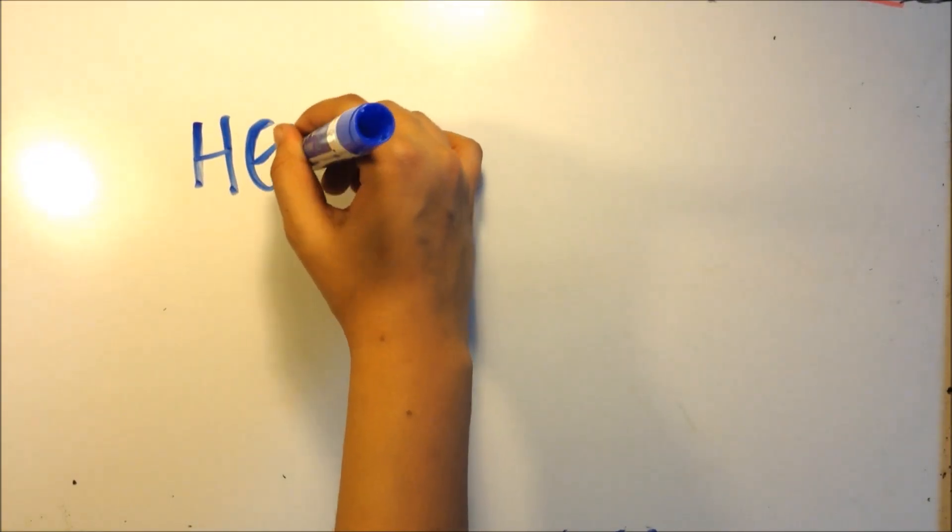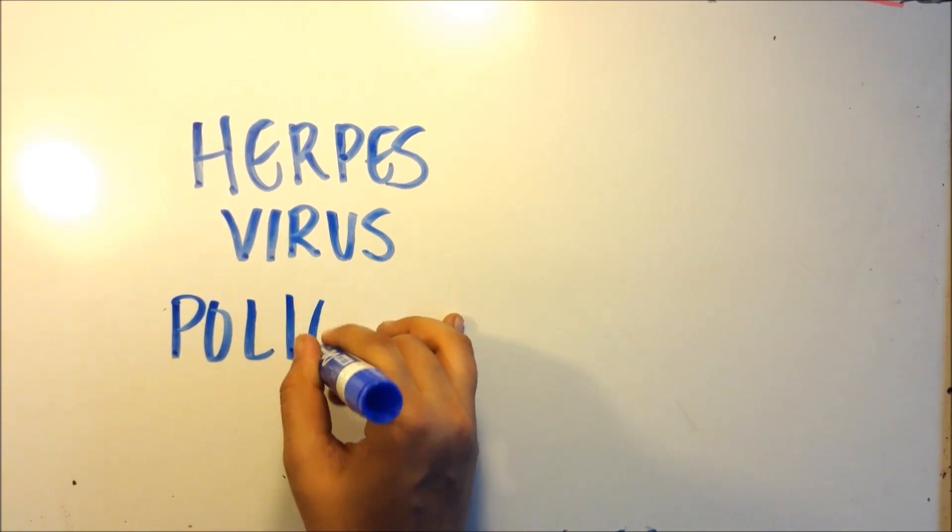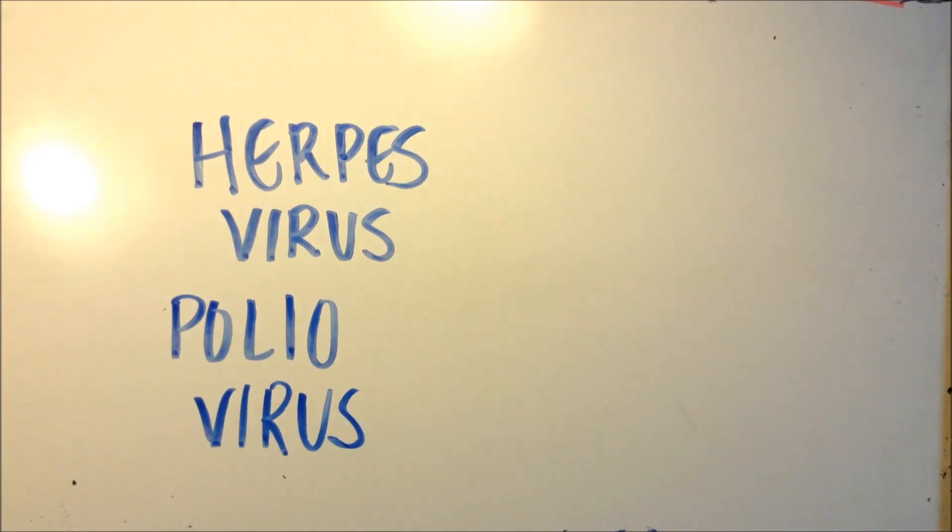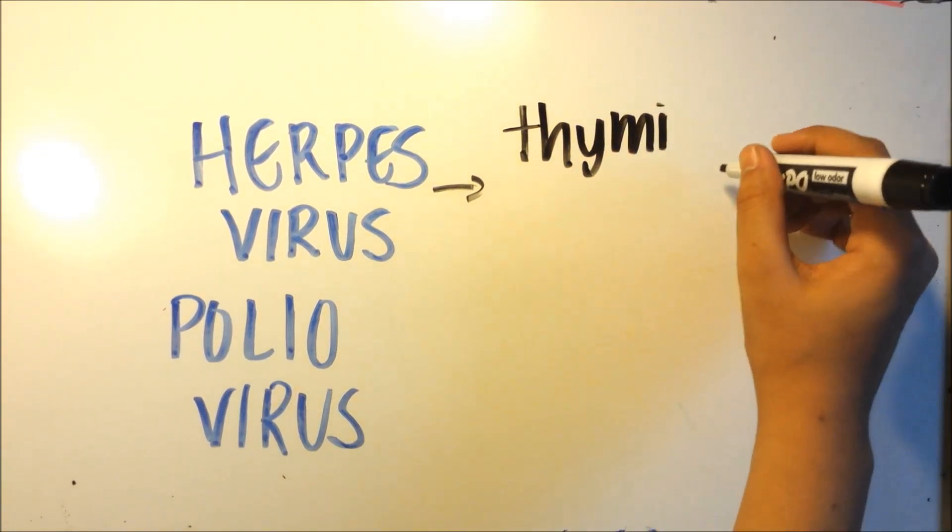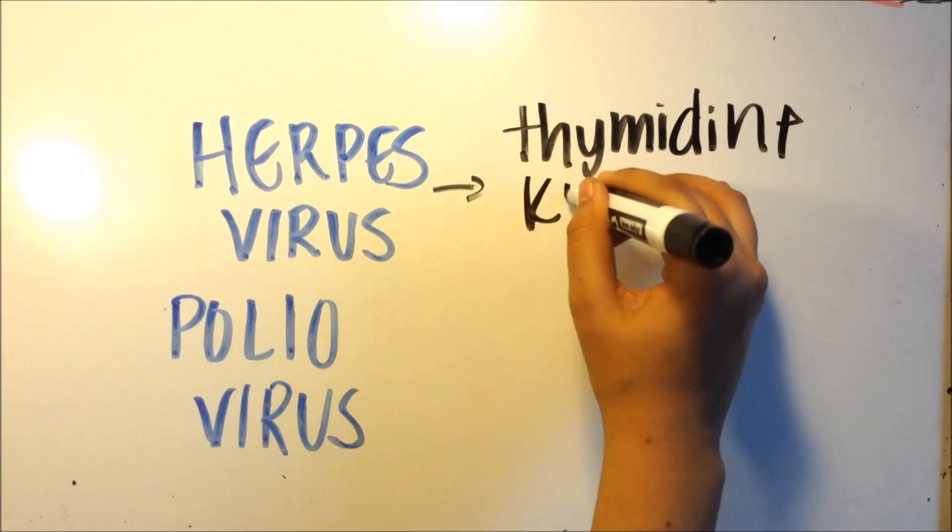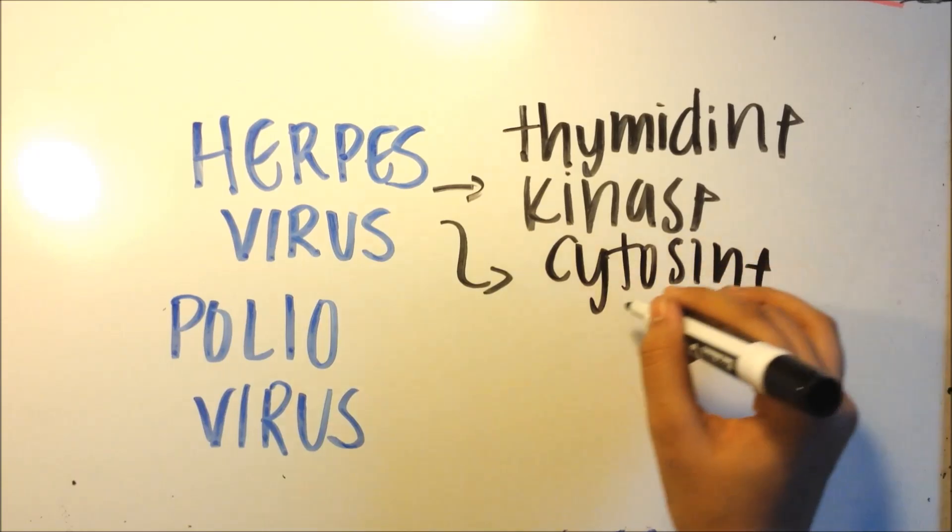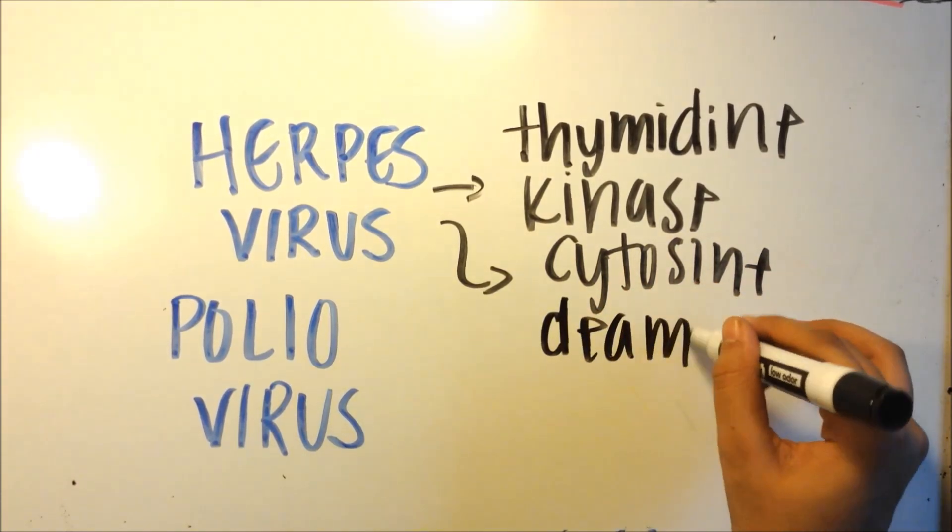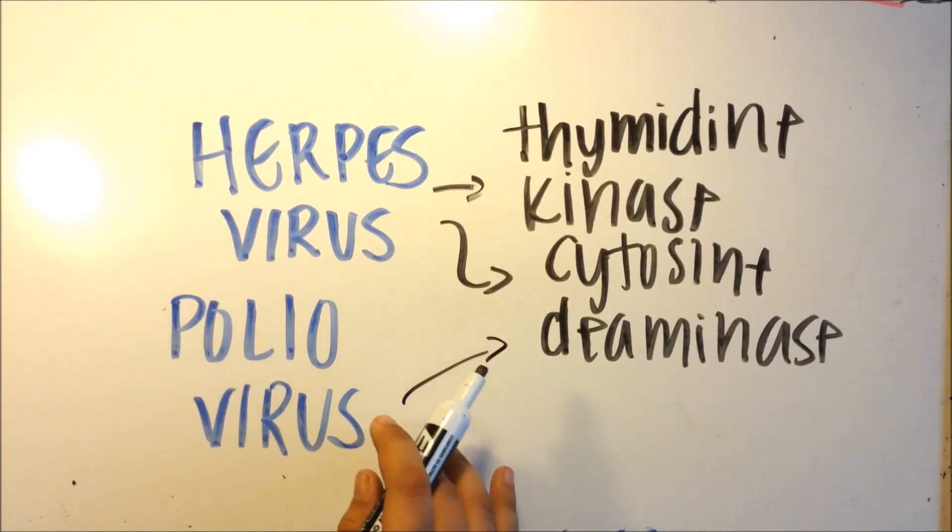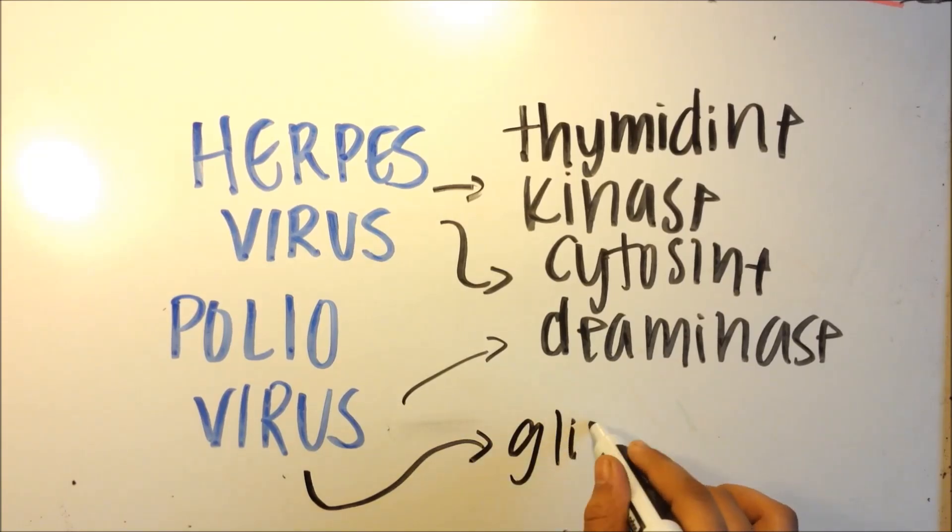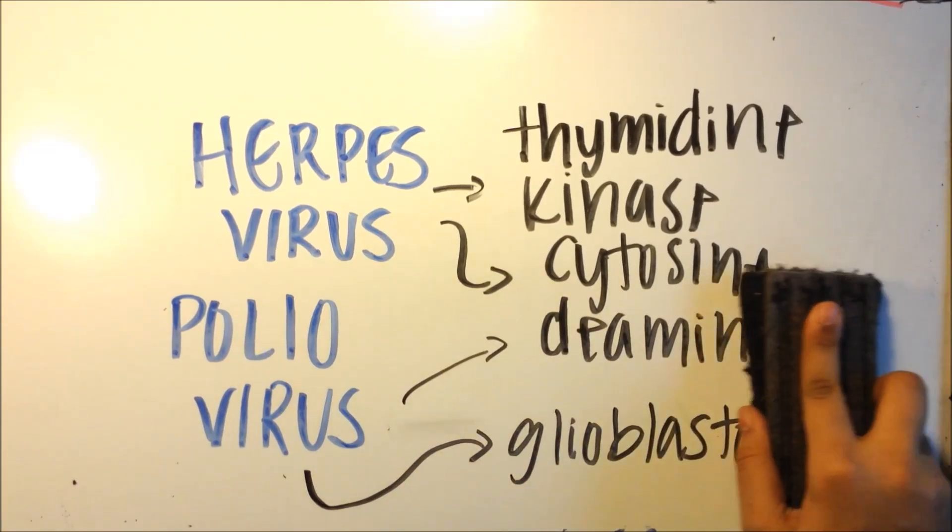That's the herpes virus and the polio virus. The herpes virus has a lot of genes in it that already code for cell suicide or cell apoptosis. One of those are thymidine kinase or cytosine deaminase. These are really long names, but essentially both of these genes code for some kind of component for the cell to kill itself. The polio virus is being used currently to treat glioblastoma in patients. Glioblastoma is a very aggressive cancer, so to be able to use a virus to treat glioblastoma is really amazing.